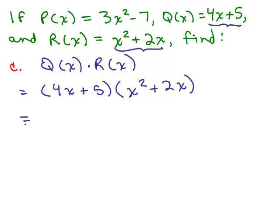So this is just the product of two binomials. I could use the FOIL method: 4x times x² is 4x³, and 4x times 2x is 8x², inner 5 times x², and the last 5 times 2x.